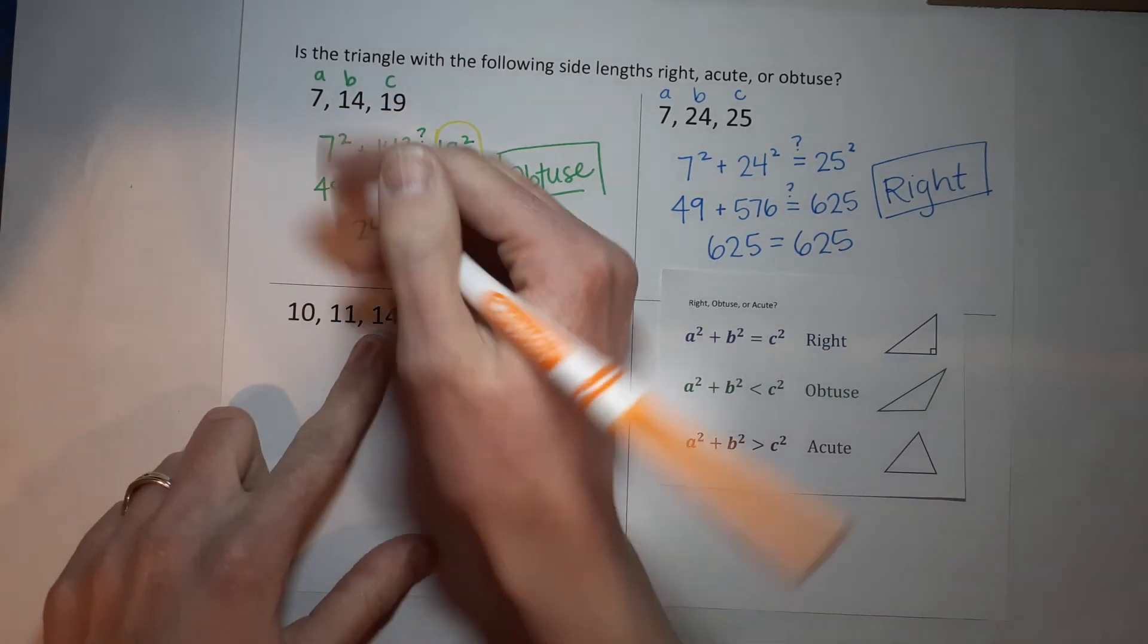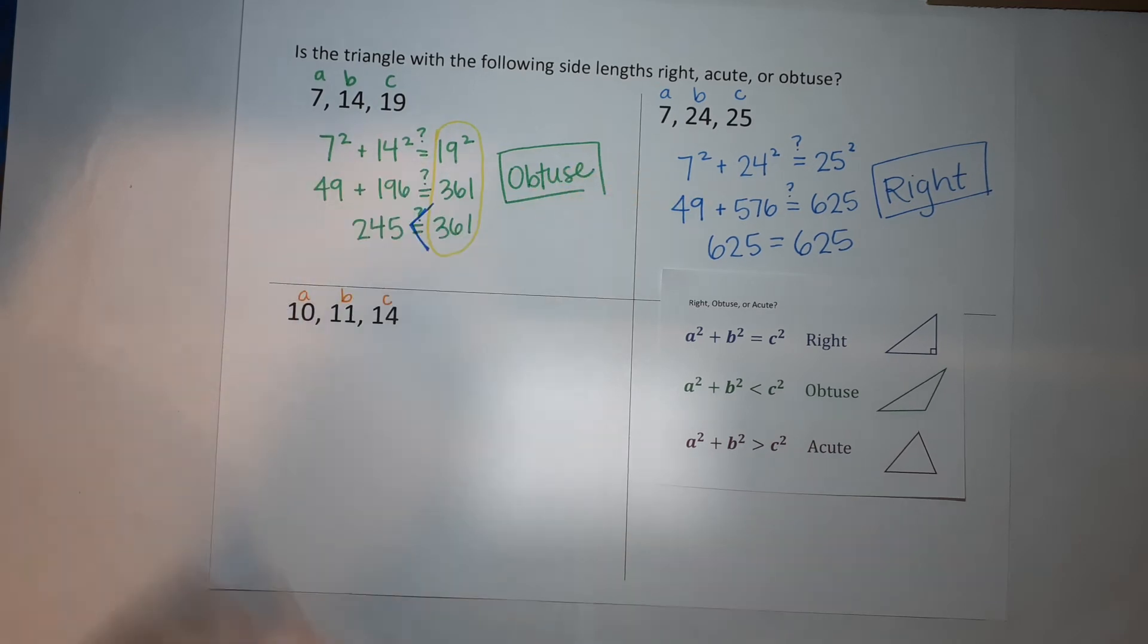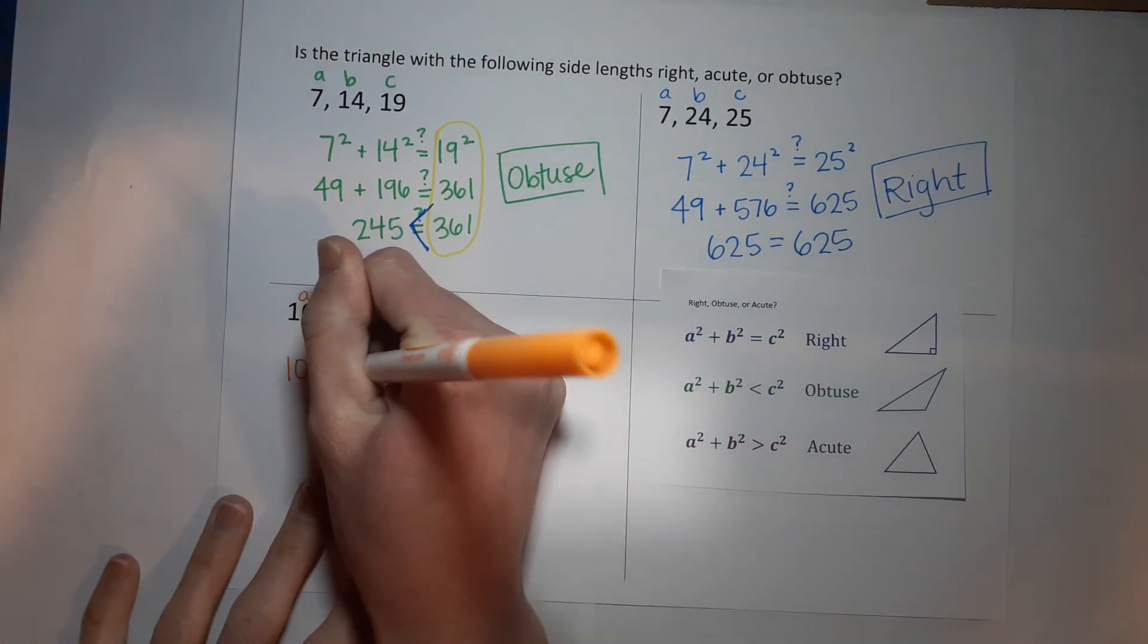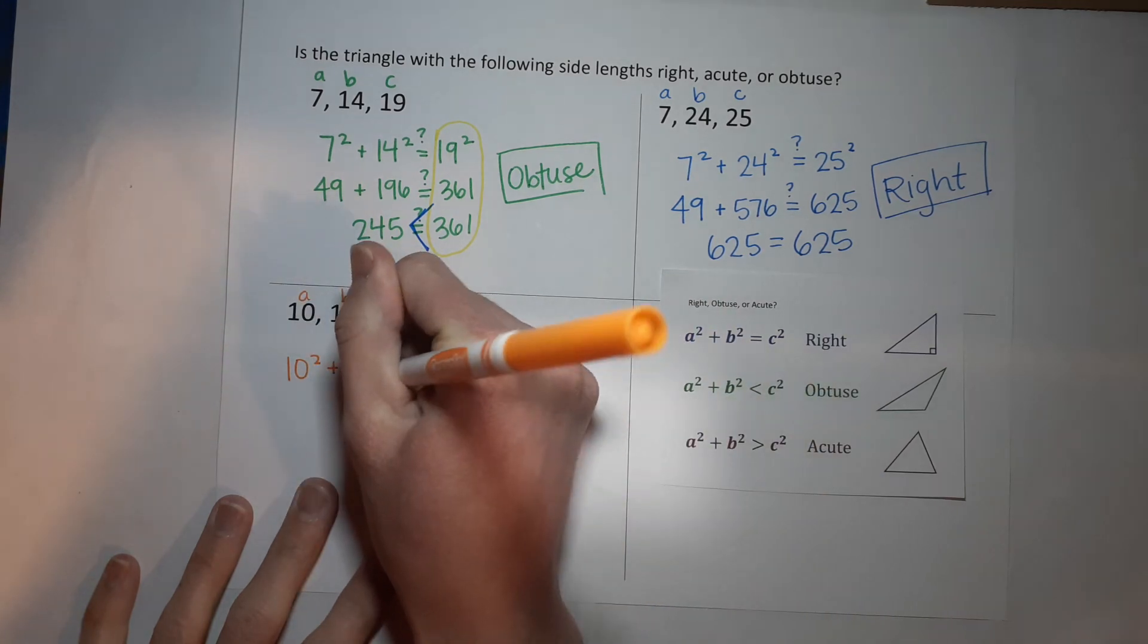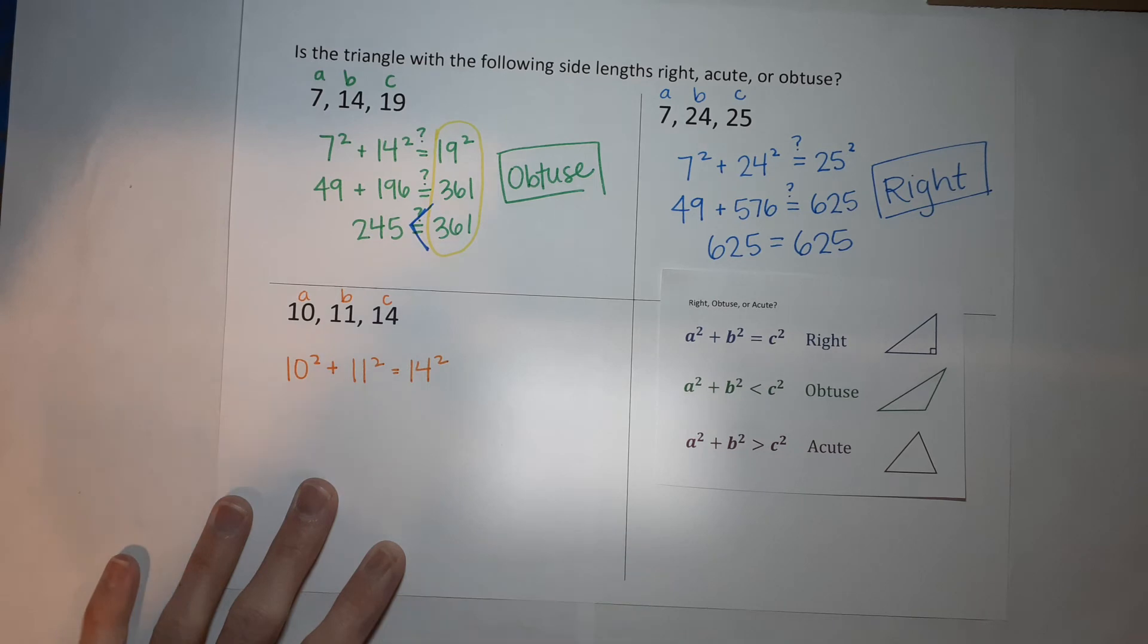So again, longest side is c, 14. The others are a and b. So a squared, 10 squared plus b squared, 11 squared equals c squared. You're going to be saying this in your sleep tonight. Okay, 14 squared.